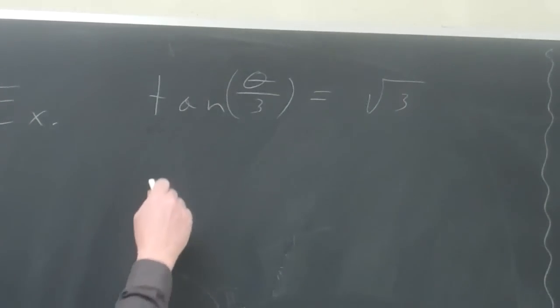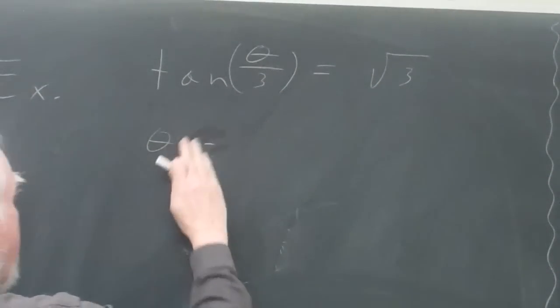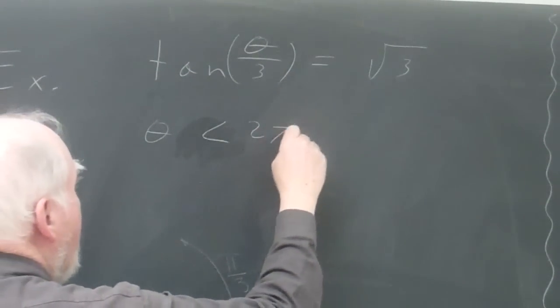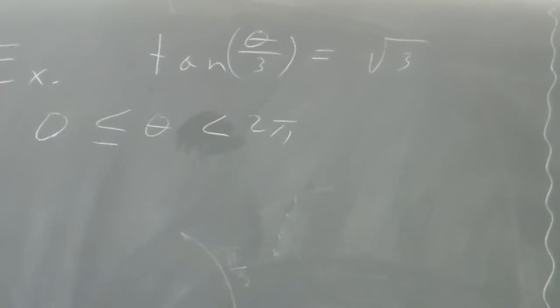And I think this time I will say I want to find all theta less than 2 pi but greater than or equal to 0 that satisfies this.